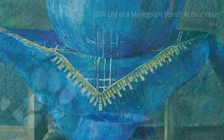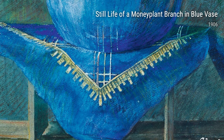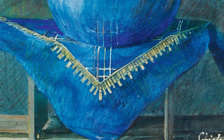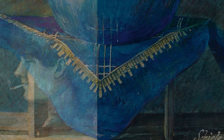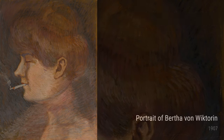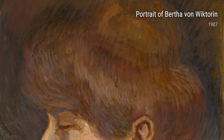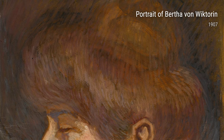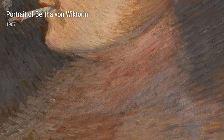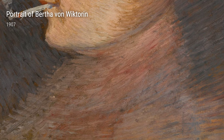In 1906, Schiele also painted Still Life of a Plant Branch in Blue Vase. This artwork demonstrates his attention to detail and his ability to capture the delicate beauty of everyday objects. It's a simple yet captivating piece that showcases his remarkable skill.